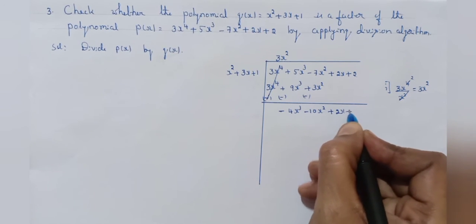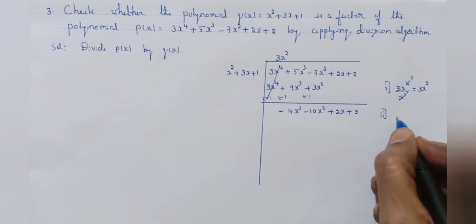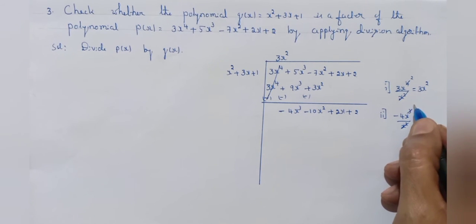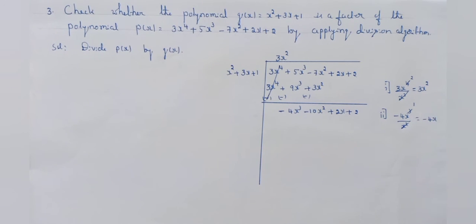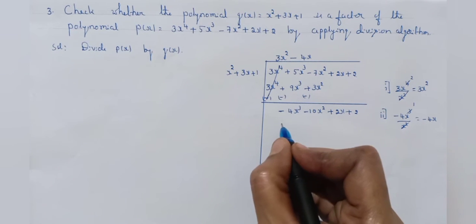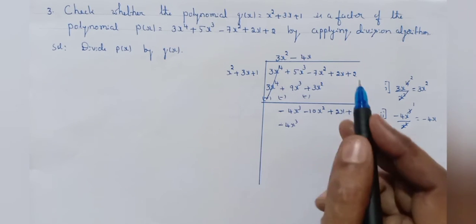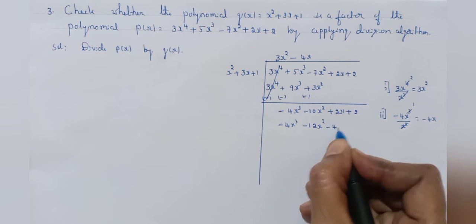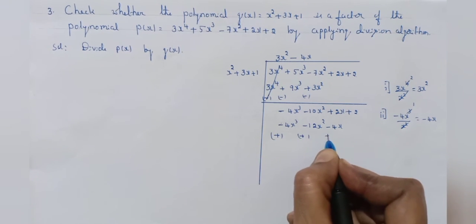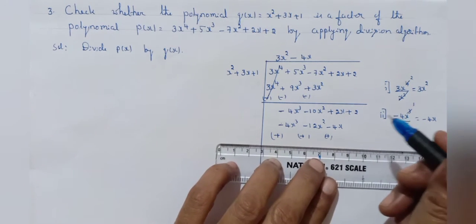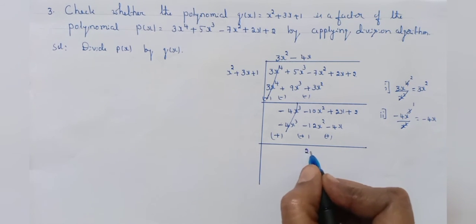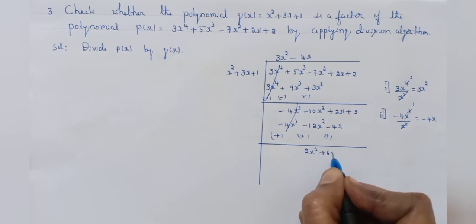Plus 5x cube minus 9x cube is minus 4x cube. Minus 7x square minus 3x square is minus 10x square plus 2x plus 2. Now divide minus 4x cube by x square — cancel x square, another x remaining, you get minus 4x. Write minus 4x in the quotient. Multiply x square plus 3x plus 1 by minus 4x: minus 4x cube minus 12x square minus 4x. Change signs: plus plus plus. Minus 4x cube plus 4x cube get cancelled. Minus 10x square plus 12x square is 2x square. Plus 2x plus 4x is plus 6x plus 2.